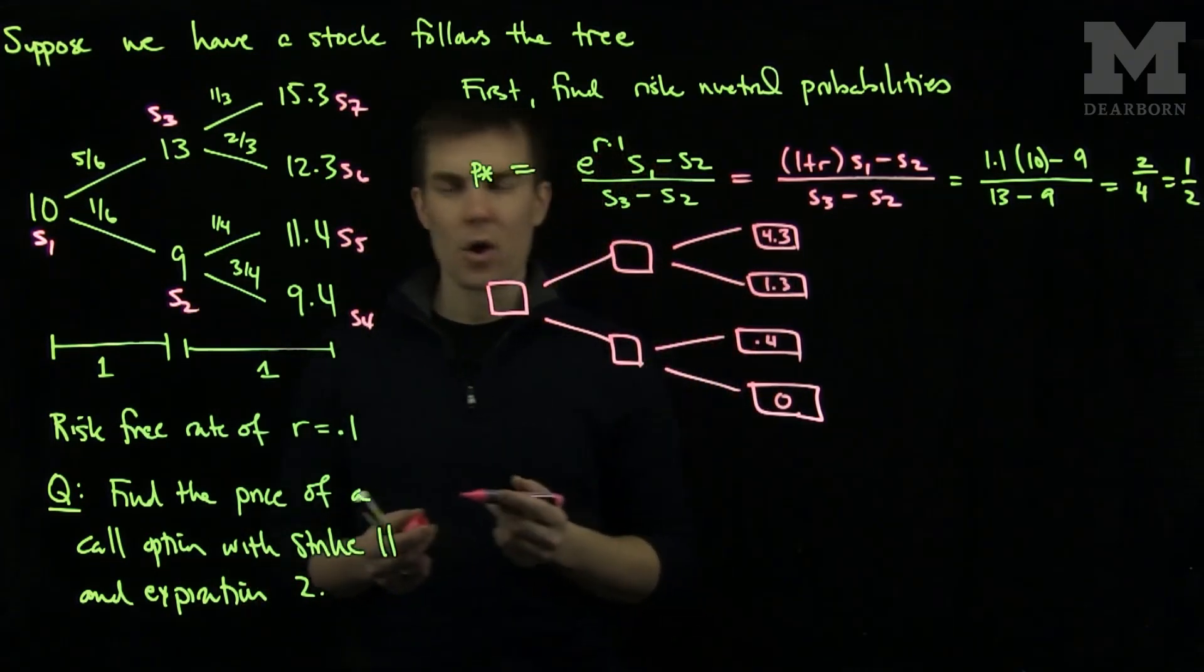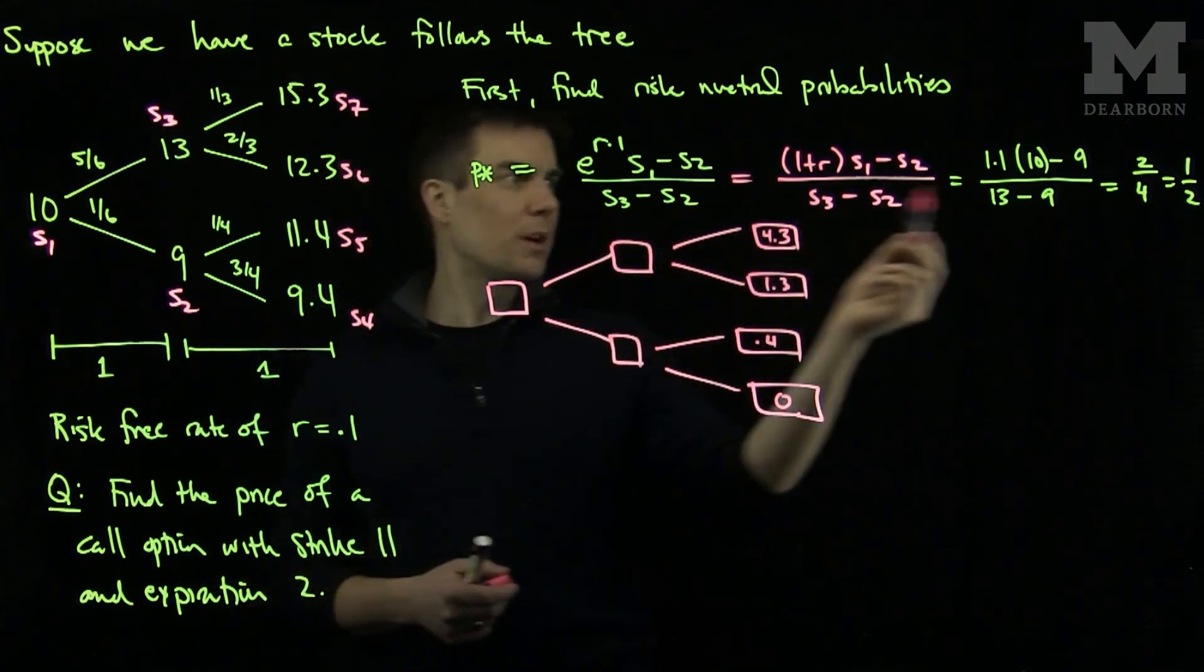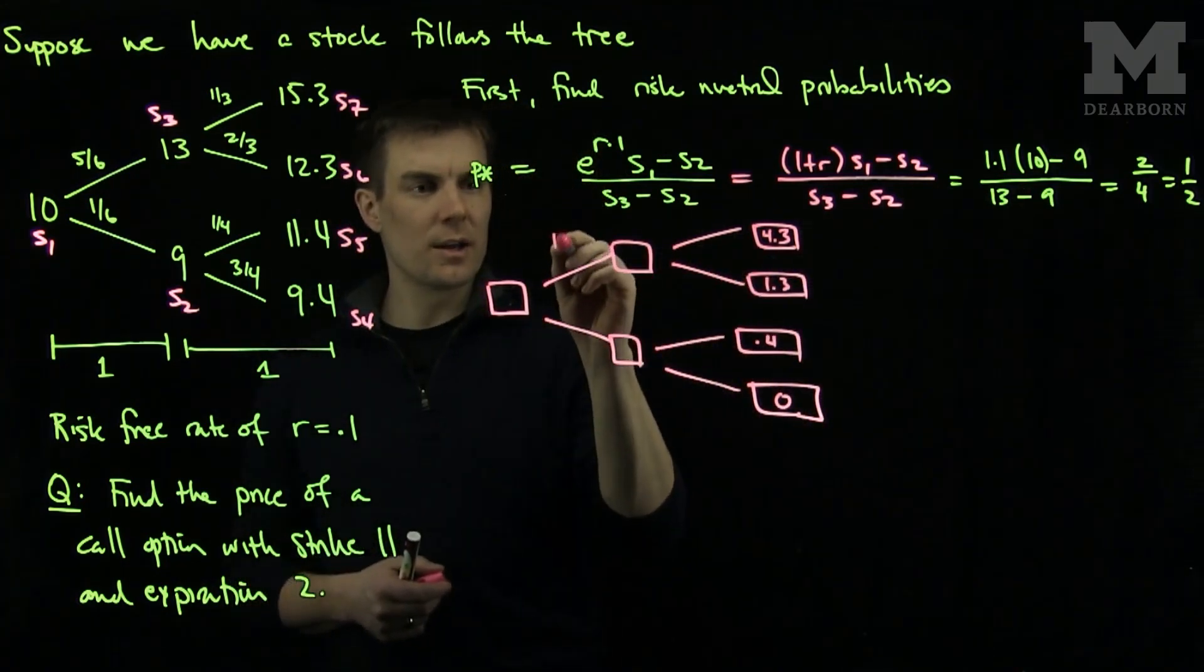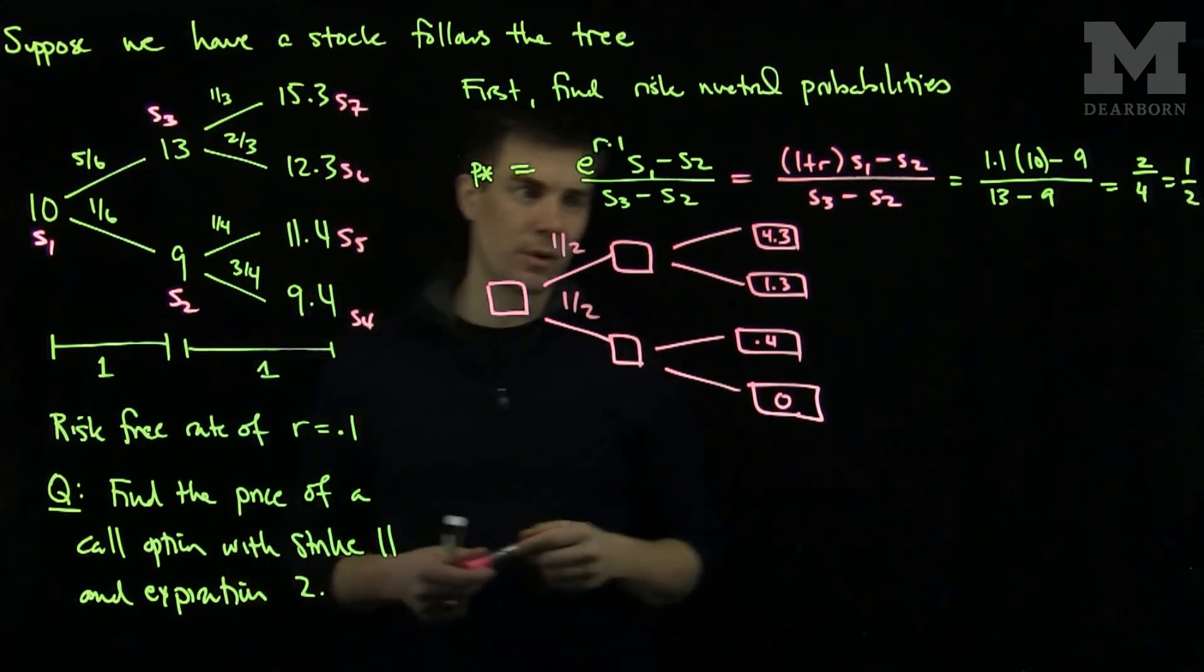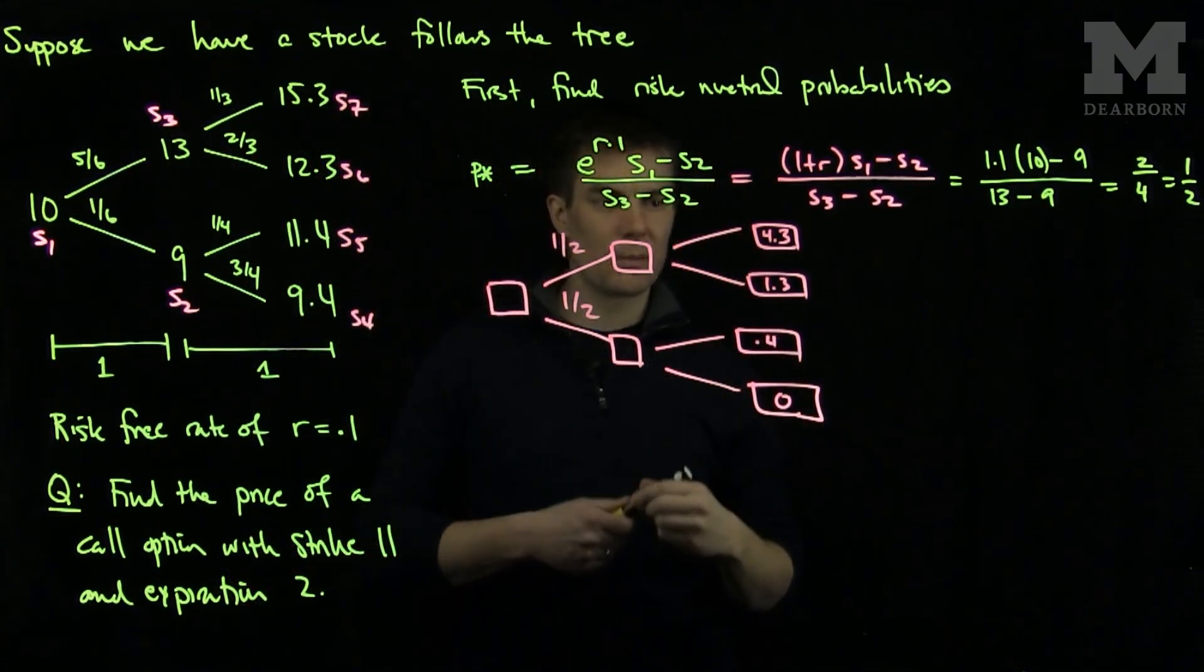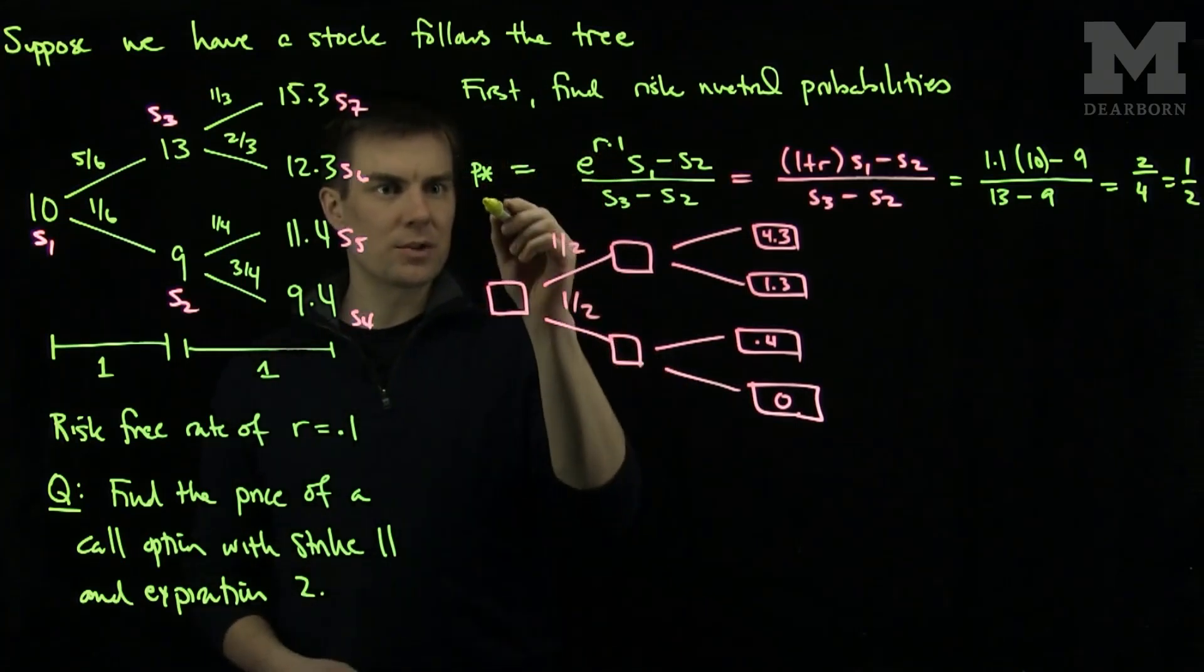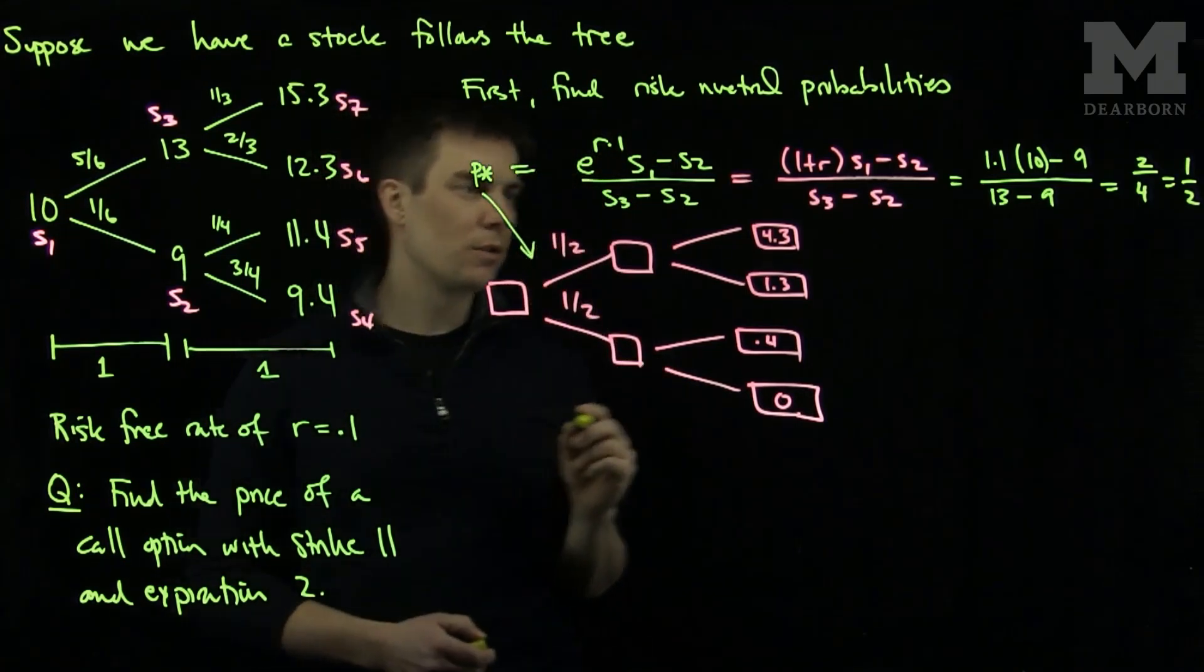We need to figure out the intermediate values. We have just found that the risk neutral probability at this first juncture is 1 half and 1 half. Notice that is much different than the original probability. Next, we will find P star for each of these intermediate brackets. So this is the P star that corresponds to this branch over here.